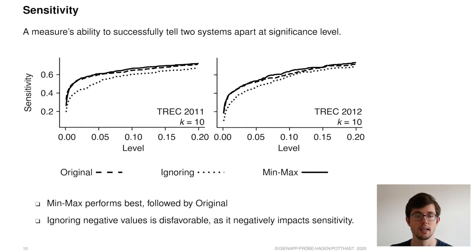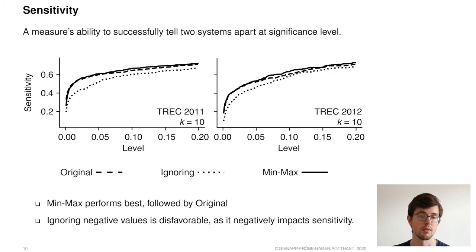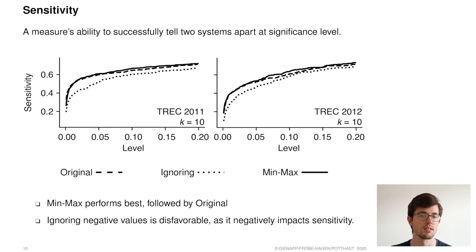Secondly, sensitivity is a measure's ability to successfully tell two systems apart at a certain significance level. Showcased below are sensitivity plots showing the accumulated proportion of system pairs separable at a given significance level. Throughout, ignoring negative keywords negatively impacts the sensitivity of the strategy. This is likely due to the implicit information loss, as min-max and original perform similarly and better.